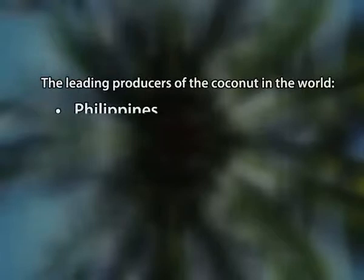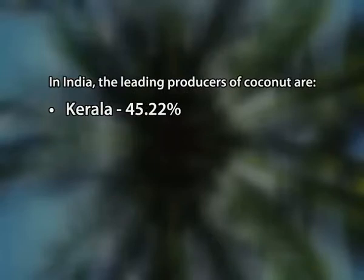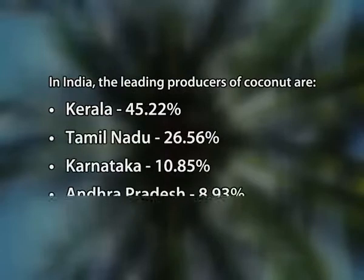Now coconut production. Coconut palms are grown in more than 80 countries of the world with a total production of 61 million tons per year. The leading producer of coconut in the world is Philippines followed by Indonesia, India and Brazil. In India, the leading producers of coconut are Kerala followed by Tamil Nadu, Karnataka and Andhra Pradesh.